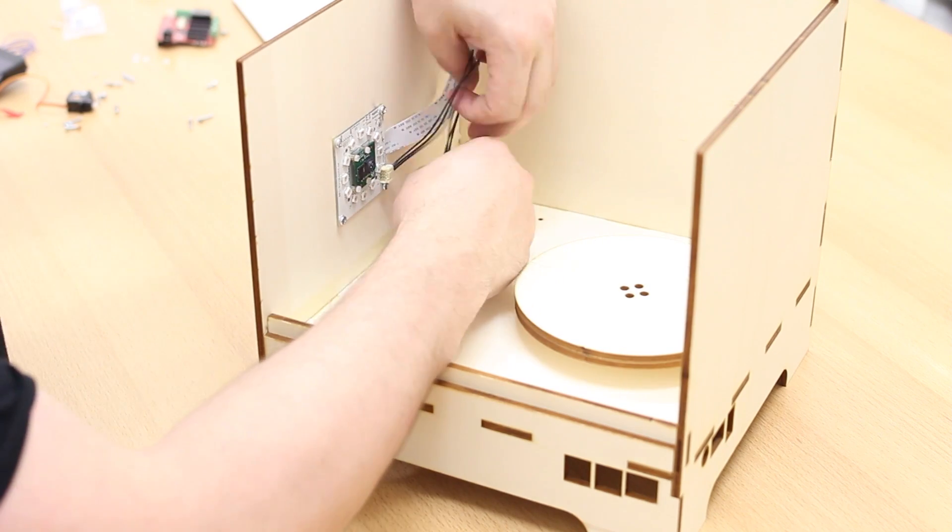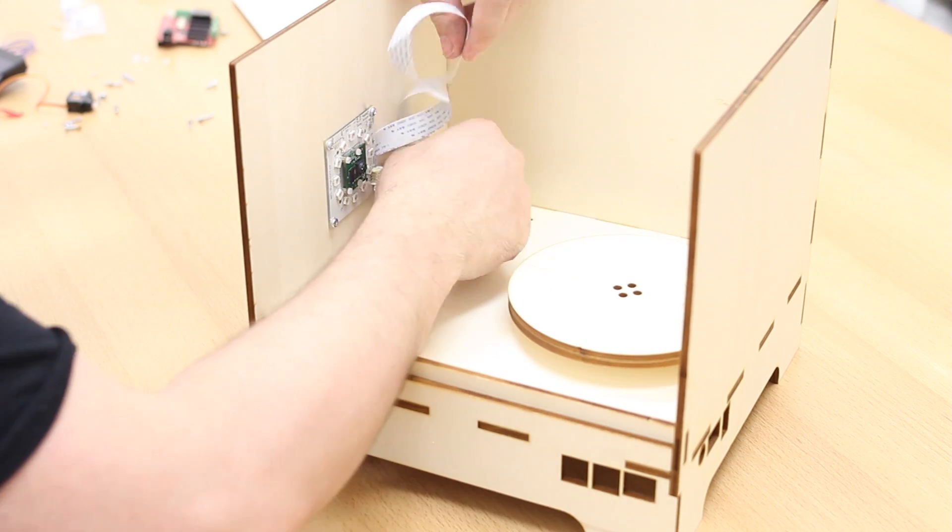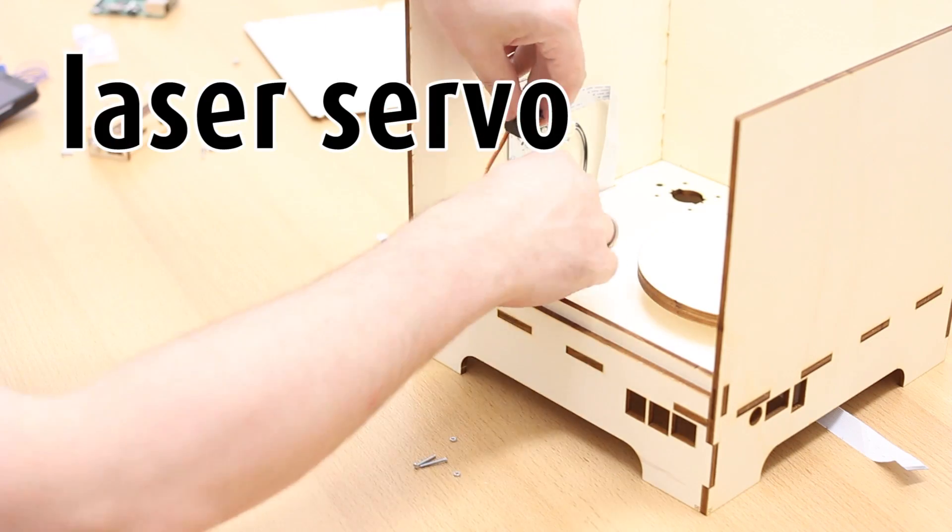Then take the cables. Start with the smaller one, put it to the smaller hole. And then the ribbon cable, it goes through the wider part.